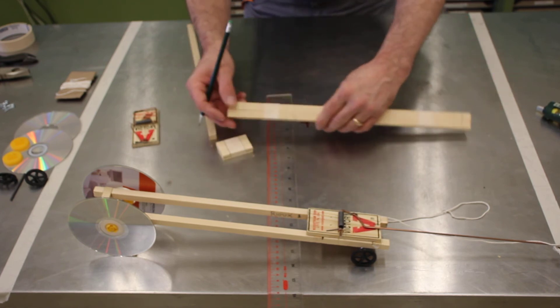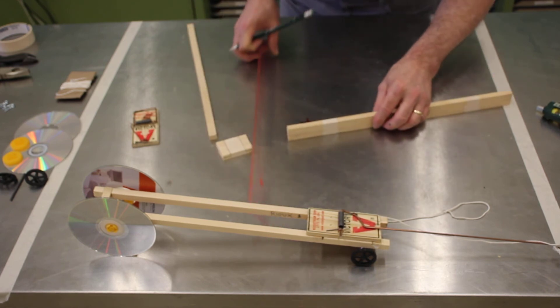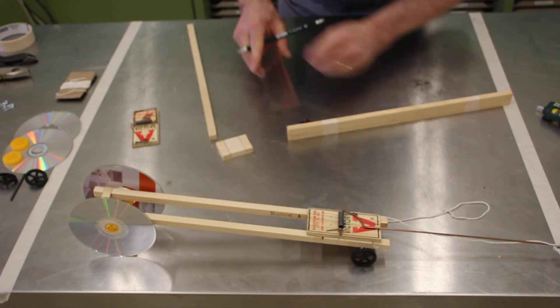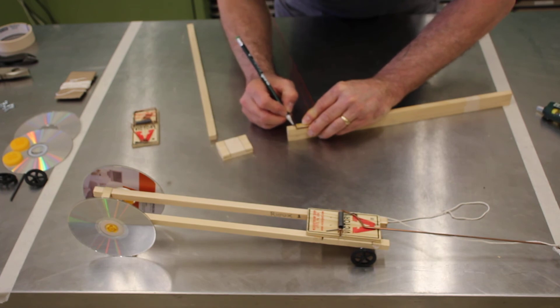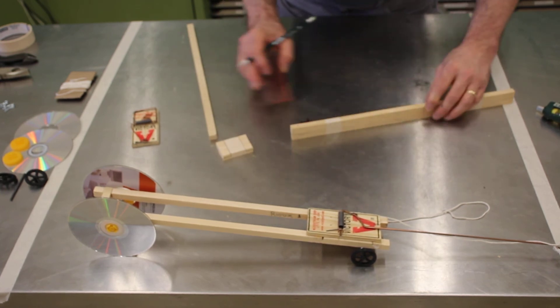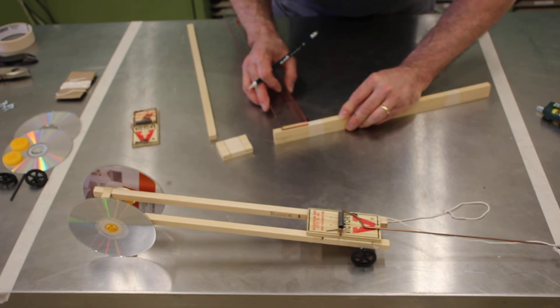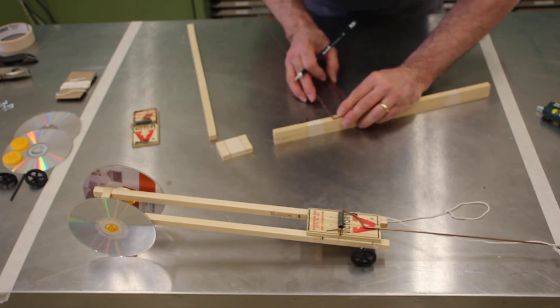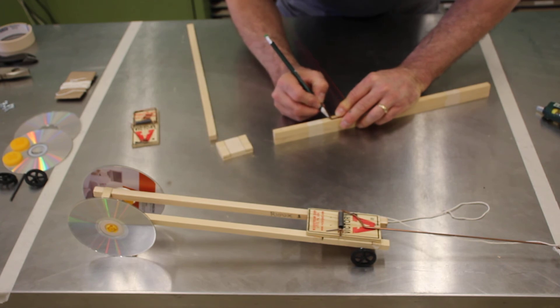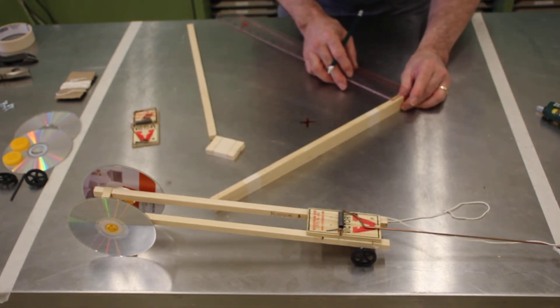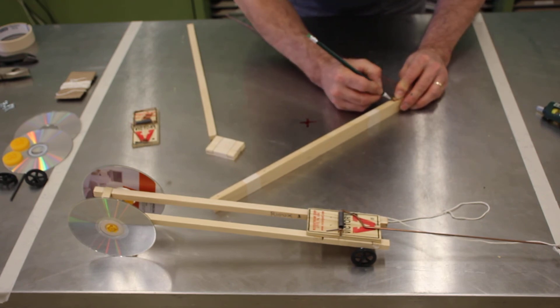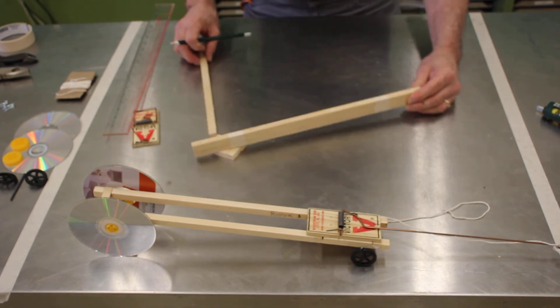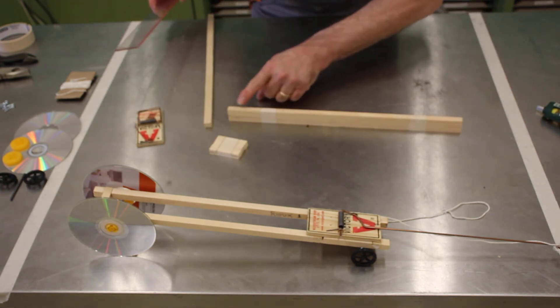We're also going to do the same thing on the frame side rails. Measure down about halfway. Measure down about halfway for each one. Double check your measurements all the time. It's easier to measure twice and cut once than measure the wrong way. You have to redo your project because you made a mistake at the very beginning.